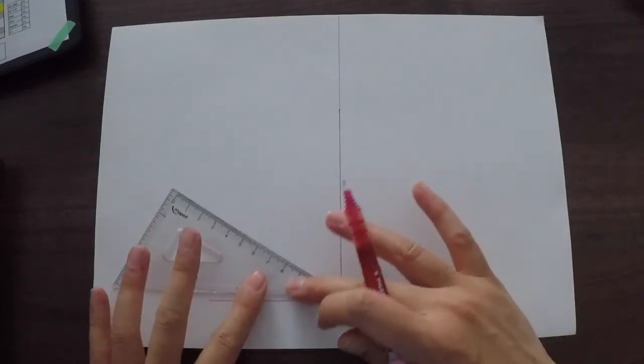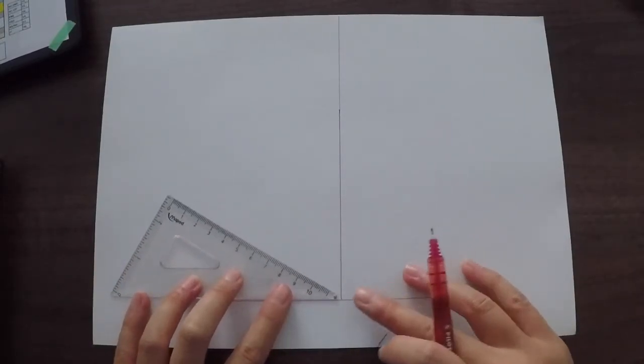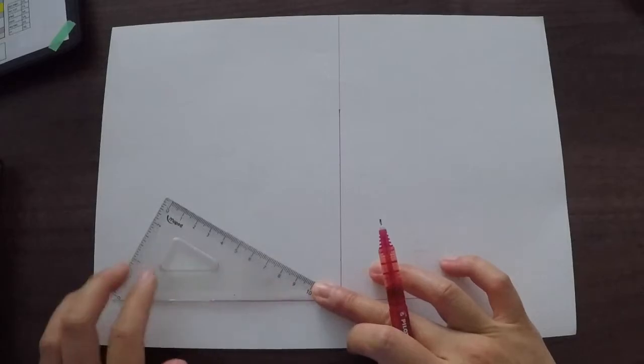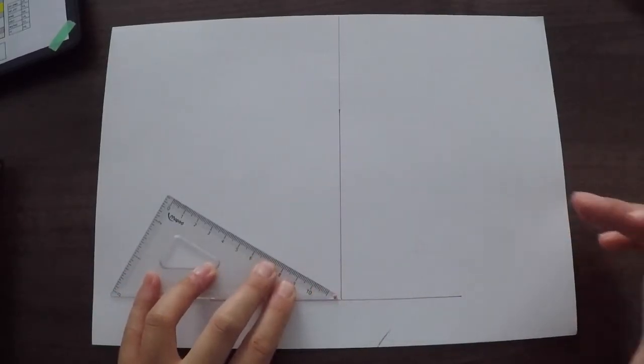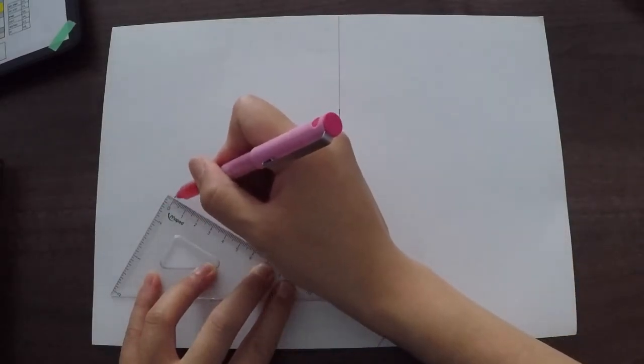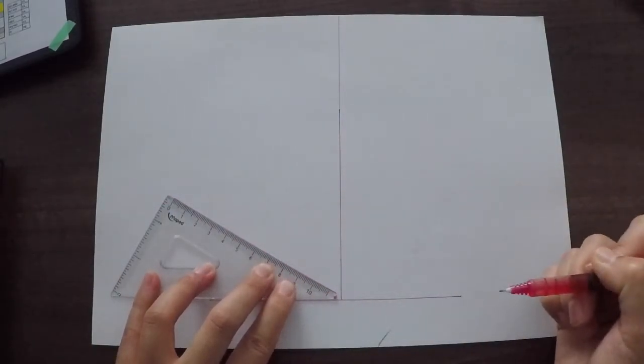So with a set square this is guaranteed with a 30 degree angle. And you simply just need to line it up down the bottom against the line that you've drawn earlier on like so. And then you just draw a line going towards the middle like so.